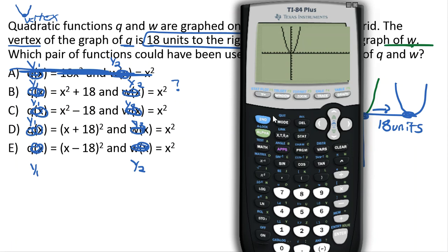All right, c says x squared minus 18. So let's try that, x squared minus 18. Press graph. There's the first graph. They're definitely not right of each other. That can't be it.